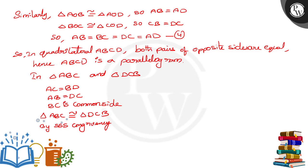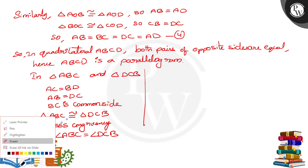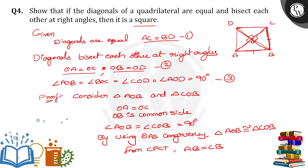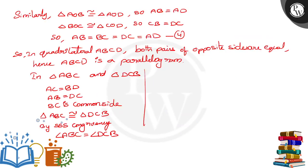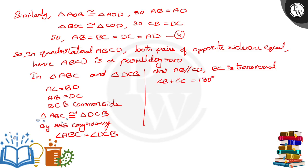When these two triangles are congruent to each other, from CPCT we get angle ABC is equal to angle DCB. Since AB is parallel to CD and BC is the transversal, these two angles are co-interior angles, so angle B plus angle C is equal to 180 degrees. Since angle B equals angle C, we get angle B plus angle B equals 180 degrees, so angle B equals 90 degrees and angle C equals 90 degrees.